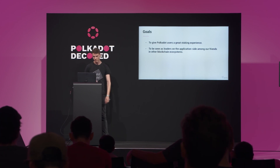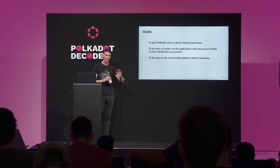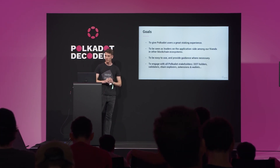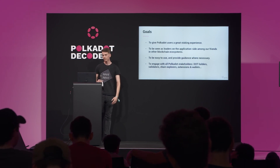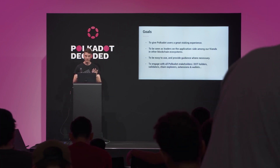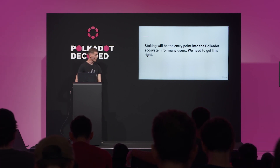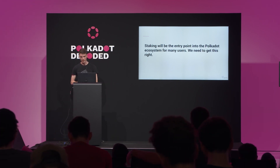We want to be on the same place on the front end. We want to be easy to use and provide users guidance where necessary. We want to stay away from wikis and long documents and all that stuff. And we want to engage everyone in this project — not just the dot token holders themselves, but validators, chain explorers, extensions, et cetera. We want to leverage all the assets in the ecosystem to create a great experience. We're very aware that staking will be the entry point into the Polkadot ecosystem for many users, so we need to get this right from the start.